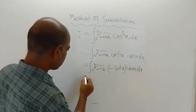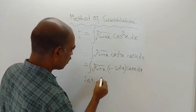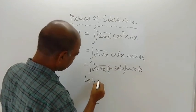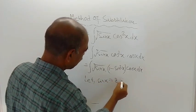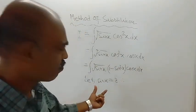Now let this sin x, this is equal to z. And now differentiate both sides of this.